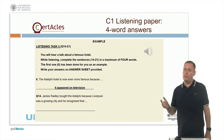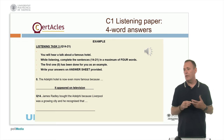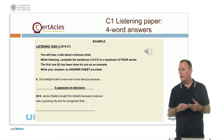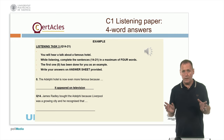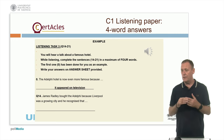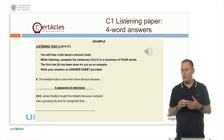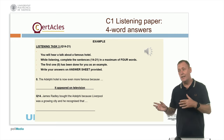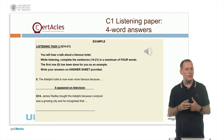We've got the question there. The first question is given to you as an example: the Adelphi Hotel is now even more famous because — and there's the answer — it appeared on television. Different answers might be accepted as long as they answer the question correctly. The second question: James Radley bought the Adelphi Hotel because Liverpool was a growing city and he recognised that. We're listening there — what did he recognise?